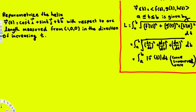The arc length function is given by this formula, and let's draw a sample diagram. We have the x, y, and z components, and the curve is going to look like a helix.